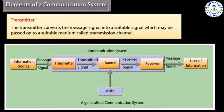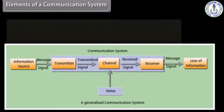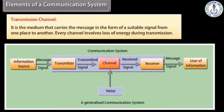A transmitter converts the message signal into a suitable signal which may be passed on to a suitable medium called the transmission channel. The transmission channel is the medium that carries the message in the form of a suitable signal from one place to another.